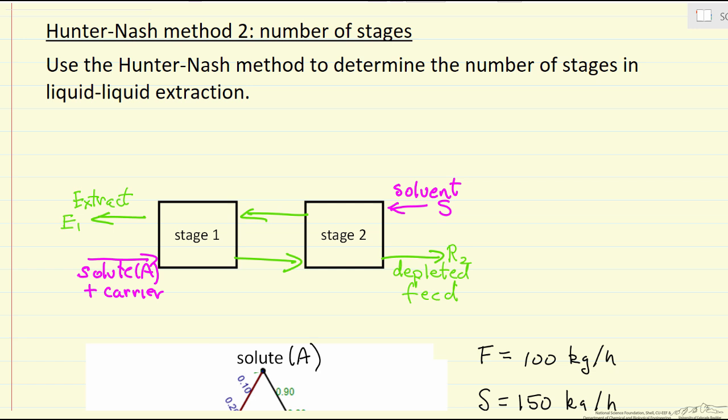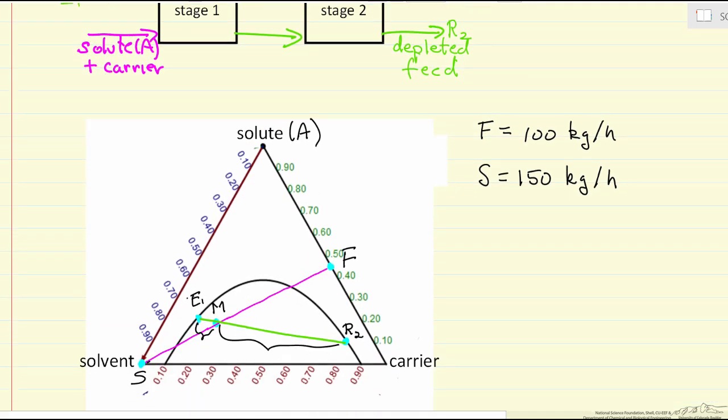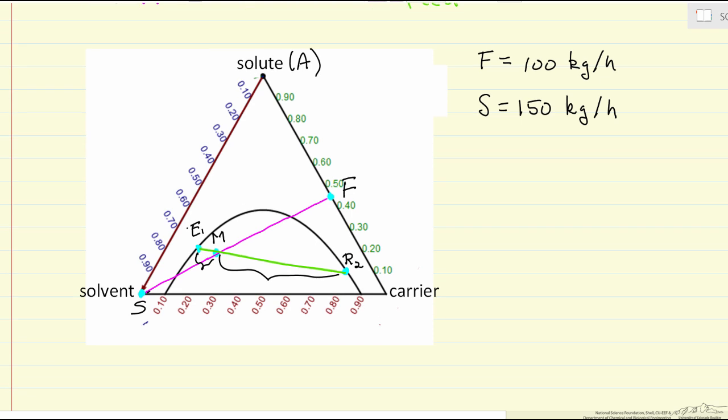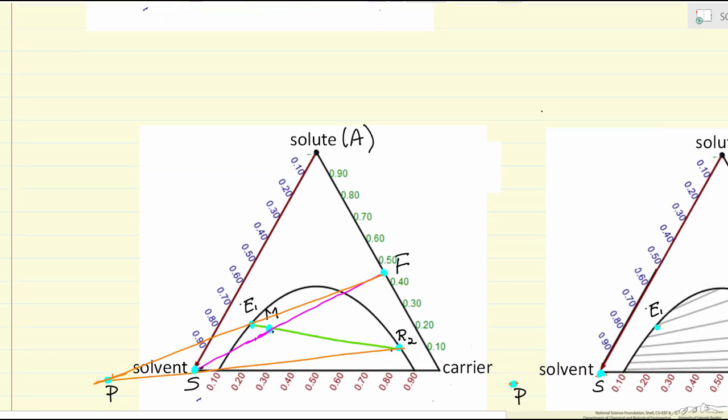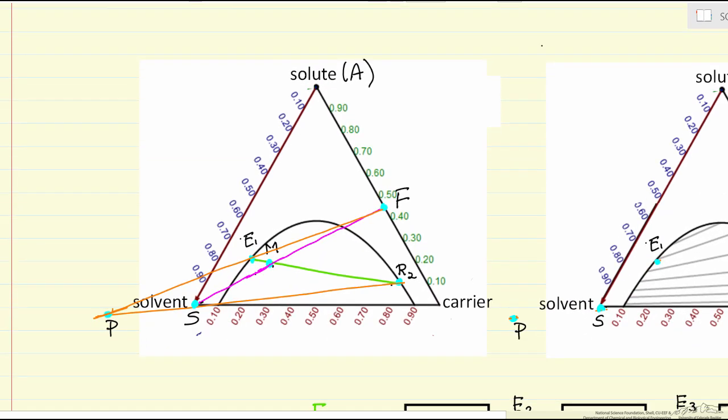In the first screencast we looked at a simple two-stage system and used the ternary phase diagram. We fixed the flow rate of the feed and the solvent and desired extract concentration, then showed how to determine the mixing point. I won't repeat that here. Then we showed how to determine the operating point P, and these are all based on mass balances.